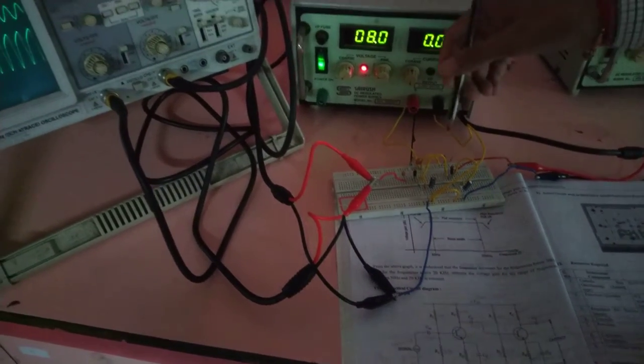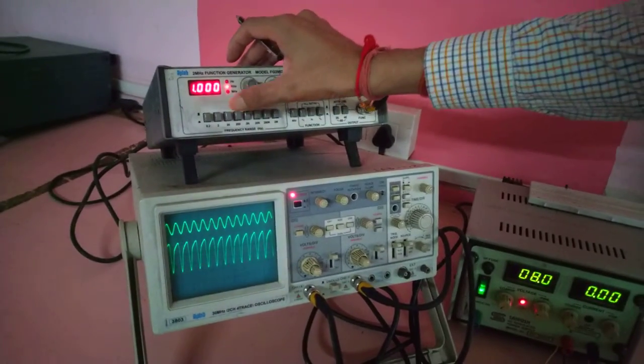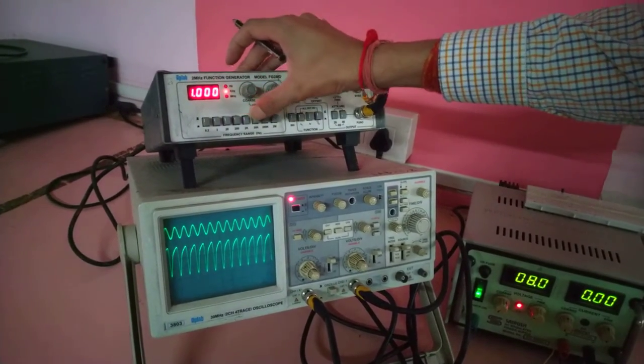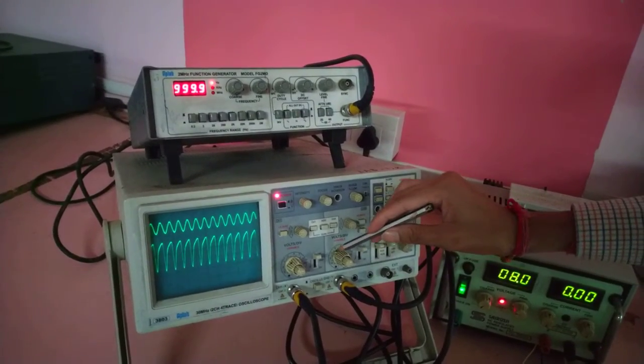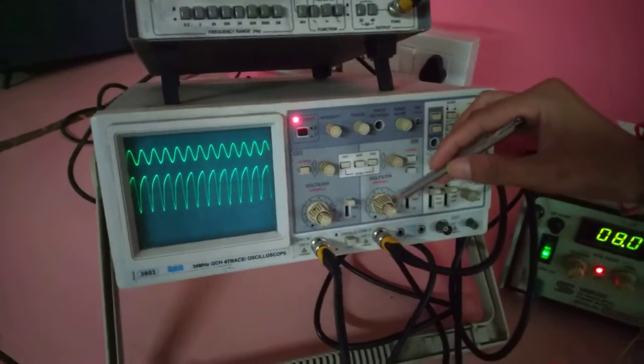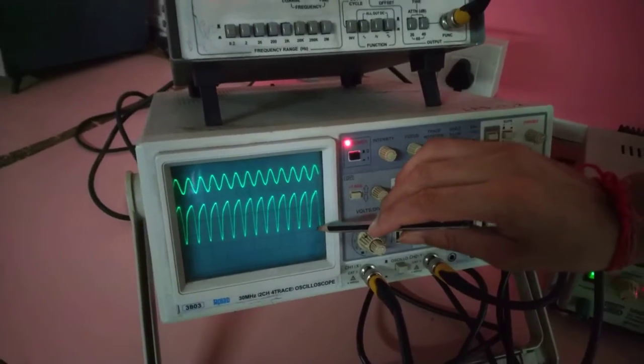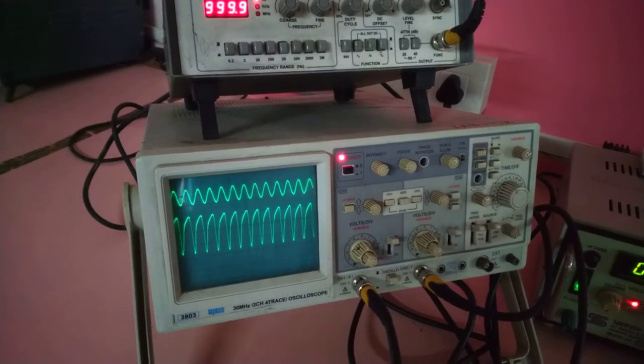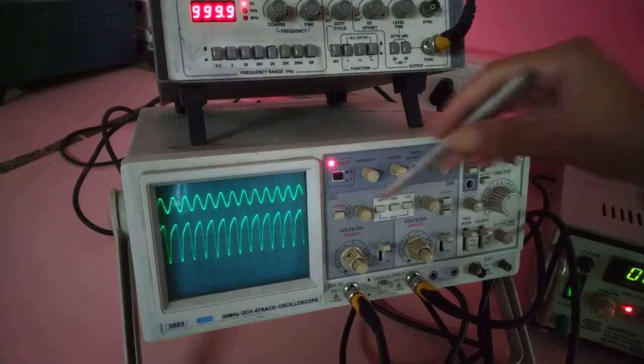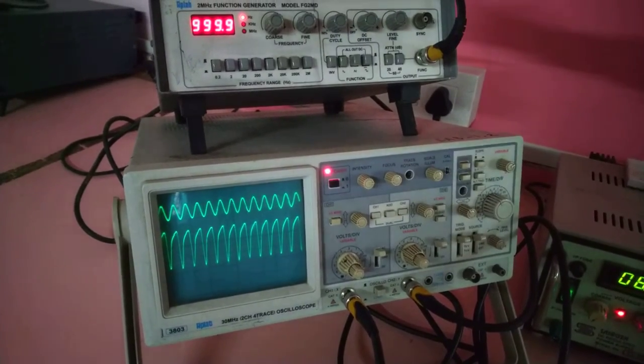In order to take different readings, right now we have set it at 1 kilohertz as the input. The output is, for example, here it is 1 volt per division and here we are getting 1, 2, 2.8, means 2800 millivolt output we are getting of the two-stage RC coupled amplifier for a voltage input of 20 millivolt peak to peak at 1 kilohertz input.